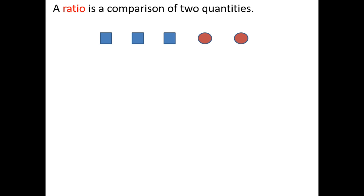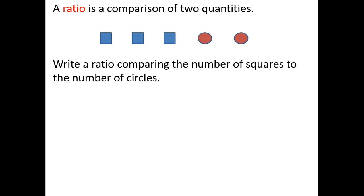Let's imagine that we've got three squares and two circles, and we want to make a comparison between the numbers of squares and the numbers of circles. We could write a ratio comparing the number of squares to the number of circles in three ways. We could use the word 'to' — since there are three squares and two circles, we could say the ratio is 3 to 2. We could also use a colon to express that comparison, and we would pronounce it exactly the same way: 3 to 2.